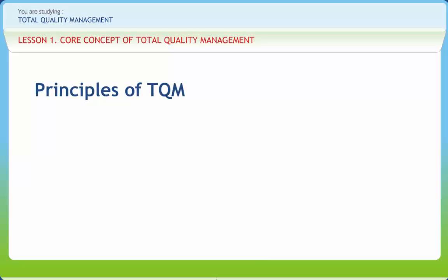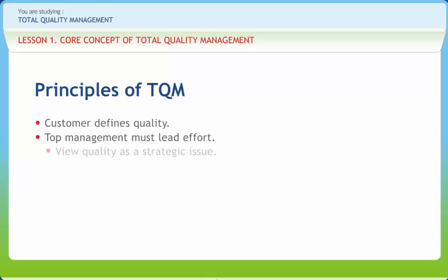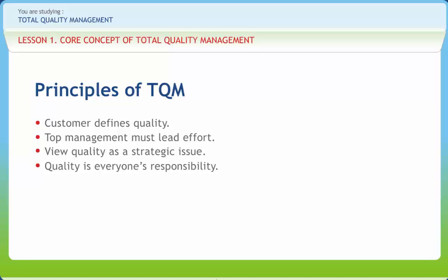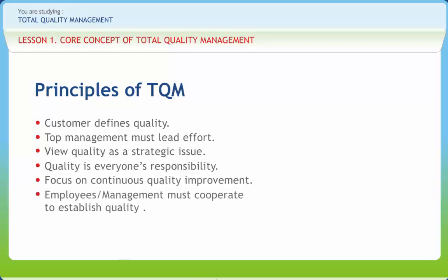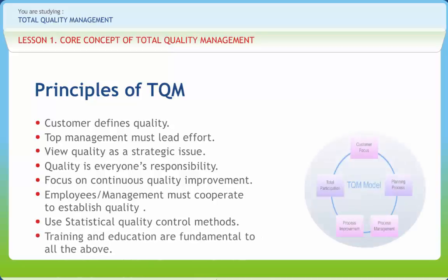Quality assurance through statistical methods is a key component in a manufacturing organization where TQM generally starts by sampling a random selection of the product. The principles of TQM are: first, the customer defines quality; second, top management must lead the effort; third, quality is viewed as a strategic issue; fourth, quality is everyone's responsibility; fifth, it focuses on continuous quality improvement; sixth, employees and management must cooperate to establish quality; seventh, use statistical quality control methods; and eighth, training and education are fundamental to all the above.